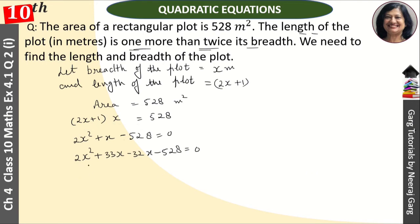In the next step, we will take common terms from both groups. x is common in the first group, giving us x(2x plus 33). Minus 16 is common in the second group, giving us minus 16(2x plus 33). This equals 0, so (2x plus 33)(x minus 16) equals 0.